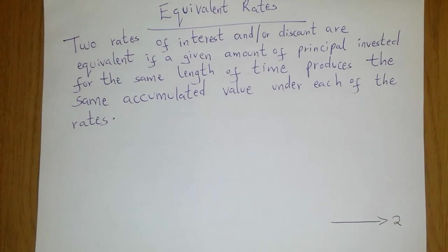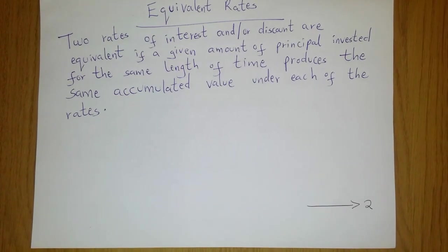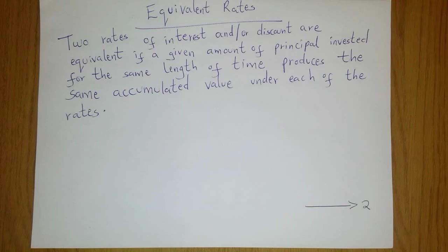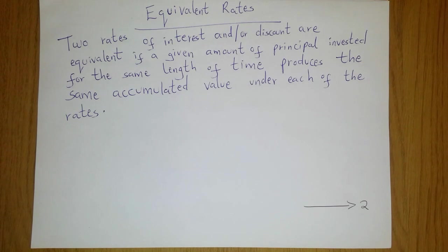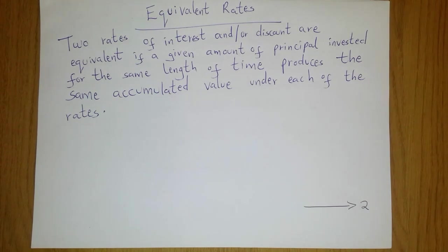Now two rates of interest or discount are equivalent if for a given amount of principal invested for the same length of time we receive the same accumulated value under each of the rates. Think of it this way: you have two different rates of interest, and for each of the rates you invest an amount C for a period of N years. Let's say the same length of time, and if you end up with the same accumulated value at the end of the time then these two rates are equivalent.